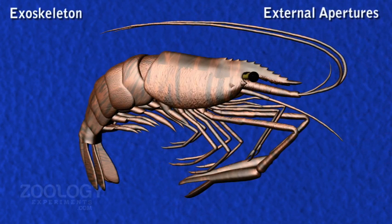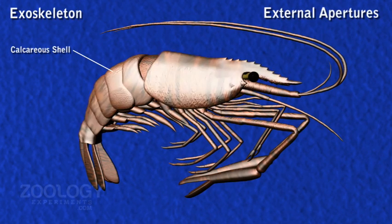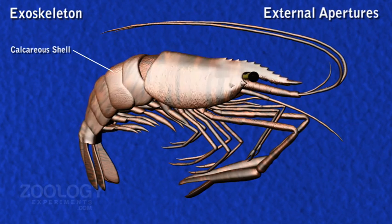Exoskeleton: The whole body is covered by a hard protective calcareous shell or exoskeleton. It is composed of a cutaneous cuticle which becomes variously hardened by the deposition of lime salts and sclerotin. The exoskeleton comprises several hardened plates called sclerites.